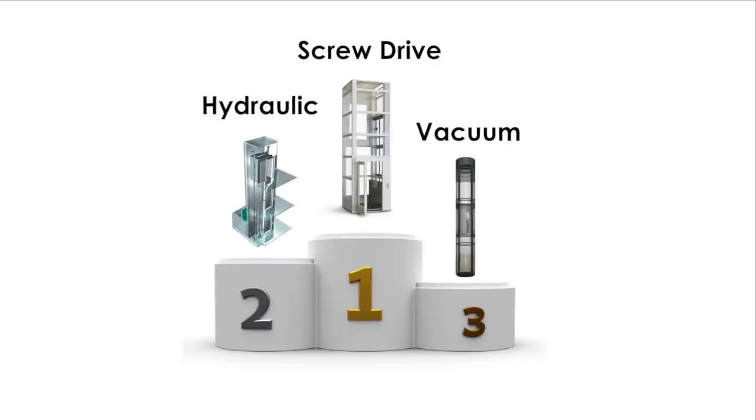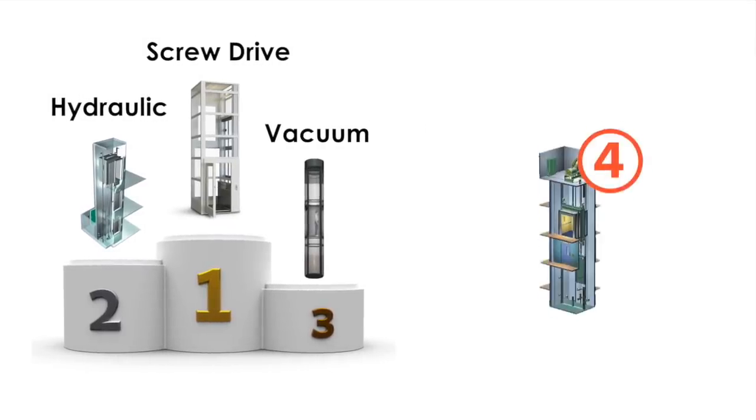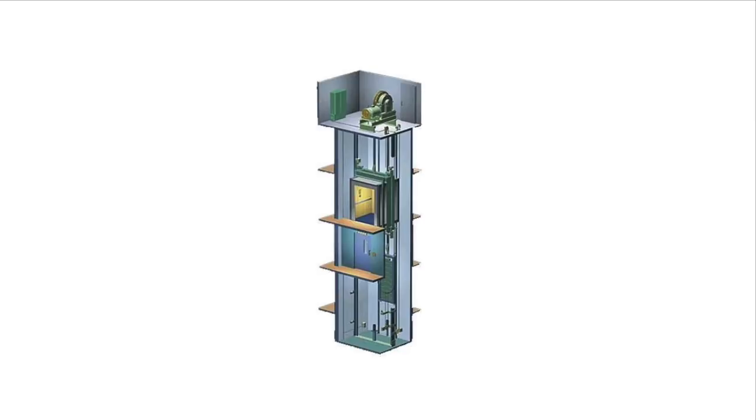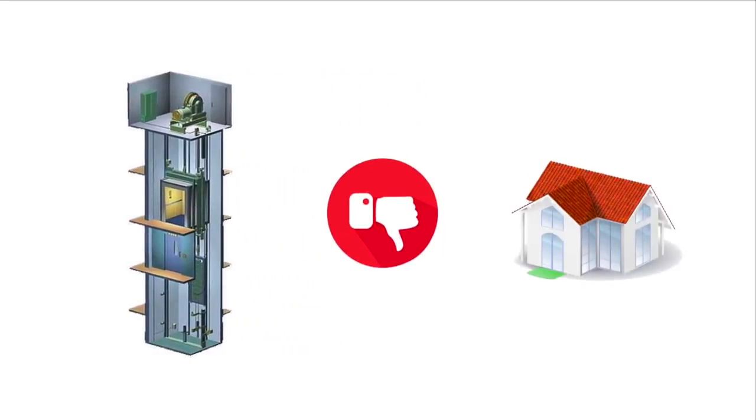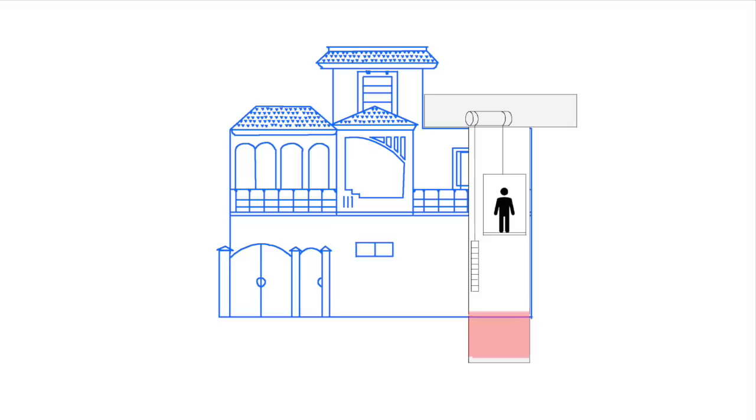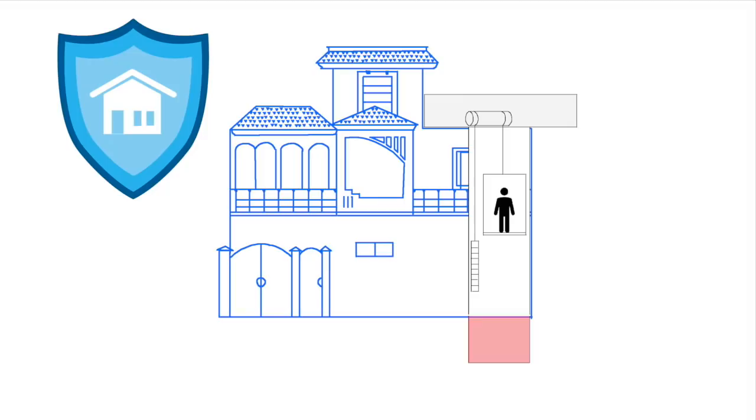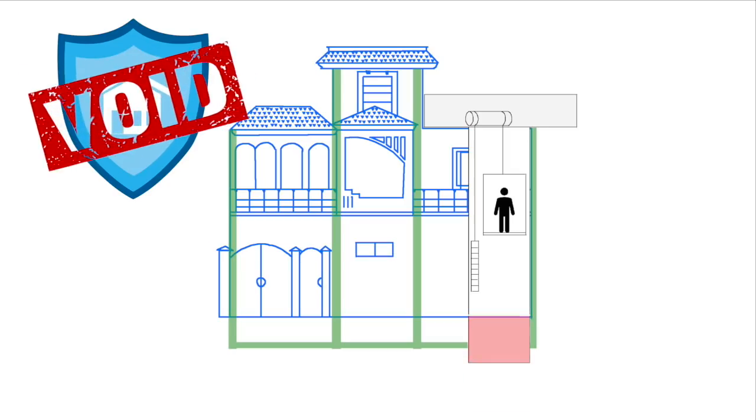Now number four: traction lifts. I've already kind of given my opinion on traction lifts up front. I don't think they're great for the home, mostly because of that deep pit. And there's one thing that people don't always think about when digging the pit: most home insurance contracts have a clause that you can't do any damage to the foundation or the supporting pillars, or else that insurance becomes void. And people often don't realize that if they're installing a traction lift, they're essentially voiding their home insurance. It's something to check and be careful of because I've seen it happen.